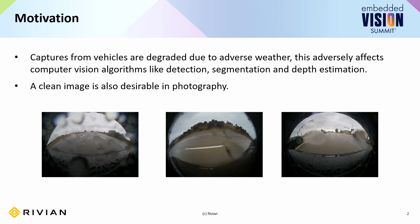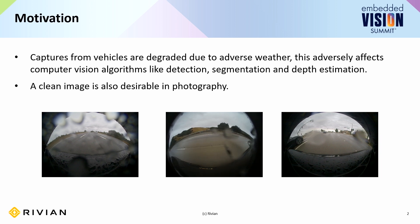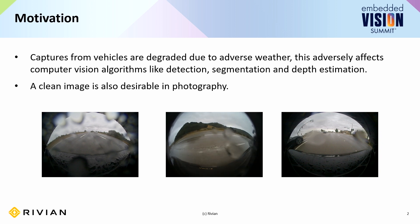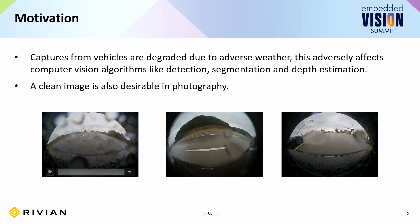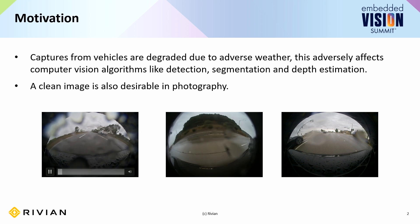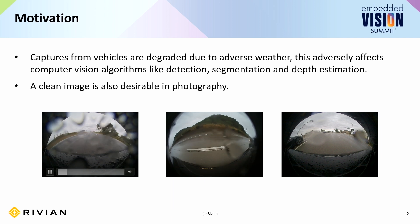Our motivation is very clear. We had captures from the vehicles which were affected by adverse weather. This adversely affects most of our computer vision algorithms like detection, segmentation, and depth estimation, which basically powers many of our features in the Rivian vehicle. Having a clean image is also desirable in photography. Here are some degraded sequences captured from Rivian vehicles — as you can see, there are a lot of raindrops on the images, and this adversely affects our object detection and other computer vision algorithms.